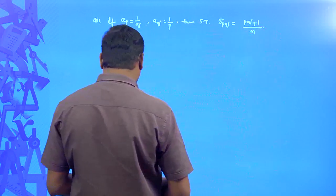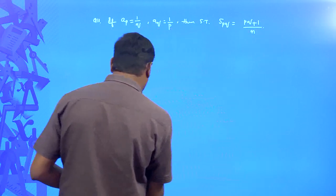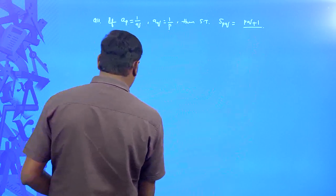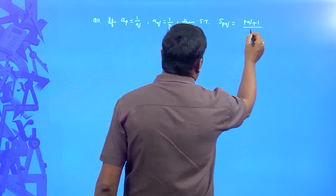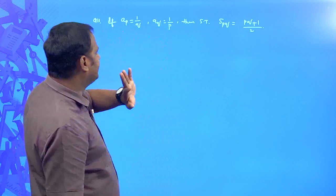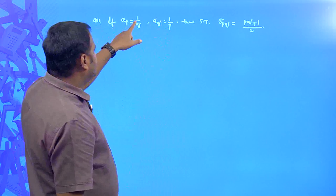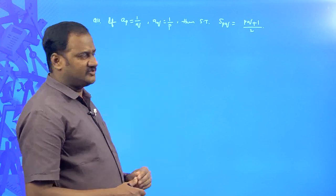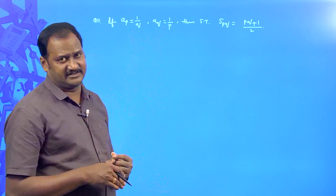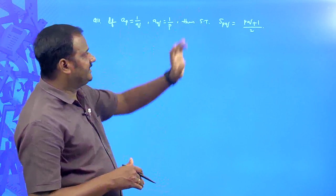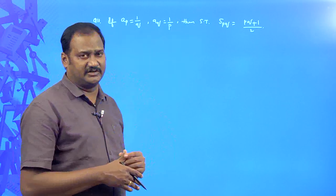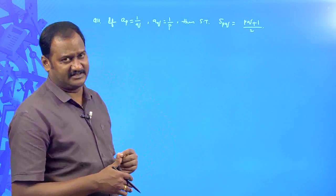How is this possible to prove? The sum of first pq terms is going to be (pq + 1) divided by 2 — the denominator is 2, not N. So how are you going to prove that S(pq) = (pq + 1) / 2? See the information given clearly: the p-th term is equal to 1/q and the q-th term is equal to 1/p. With the help of this information, we can easily figure out what the first term as well as the common difference is. After finding the first term and common difference, you can substitute directly. You have unknowns all over, which is why it feels a little different.